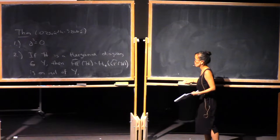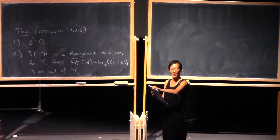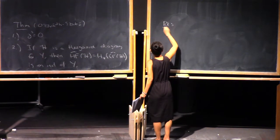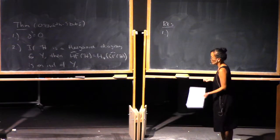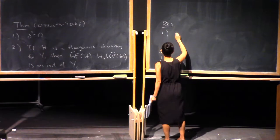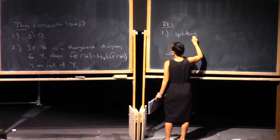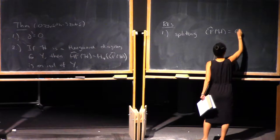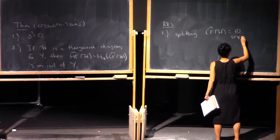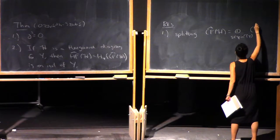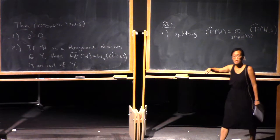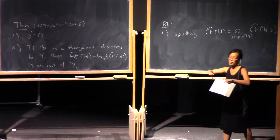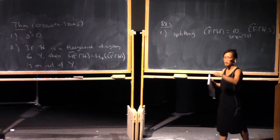Can I define a Z-grading? Yes, that's the next thing I'm going to say. First, there's a splitting: this chain complex splits along spin-C structures, so there's a splitting on the chain level. One of the problems in the problem session tells you how to partition the generators into different equivalence classes, and you can see that the differential keeps you within your equivalence class.